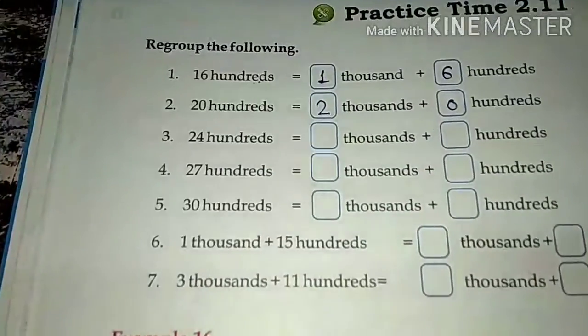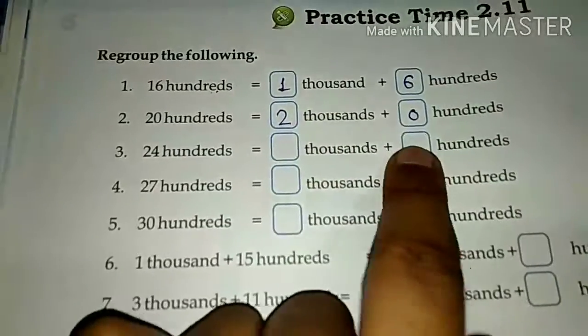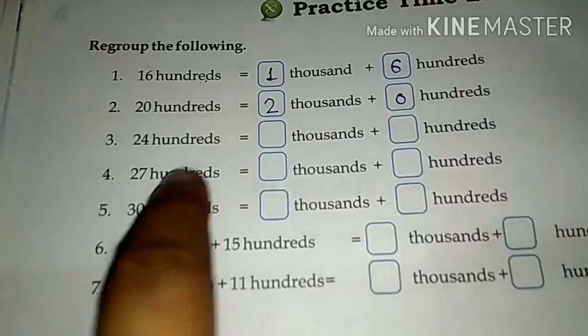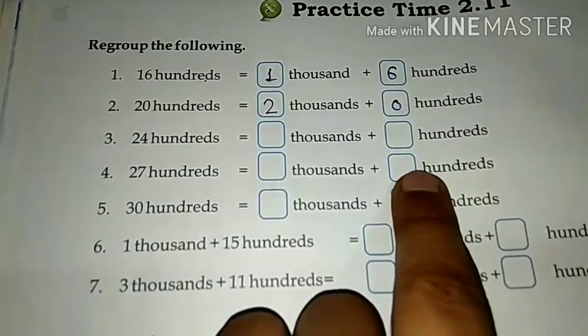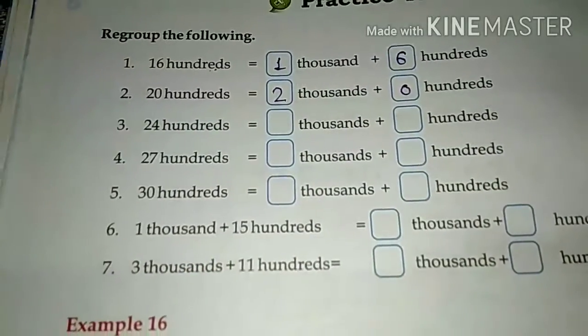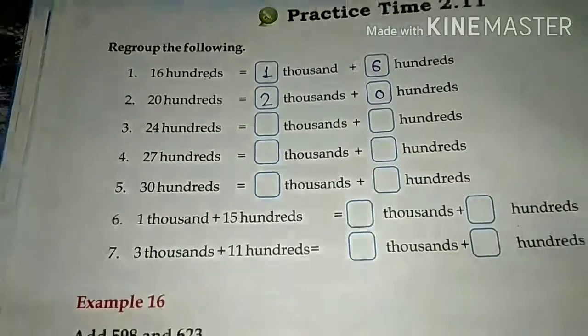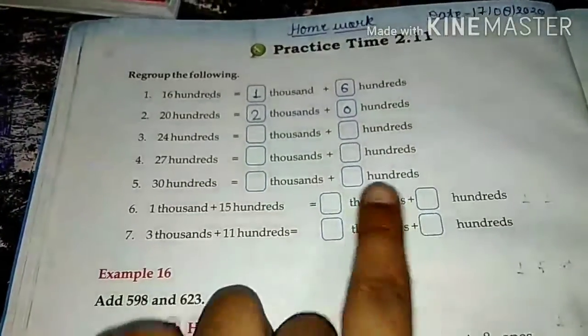24 hundreds — same process. 27 hundreds — same process. And 30 hundreds — same process. You have to do these the same way.